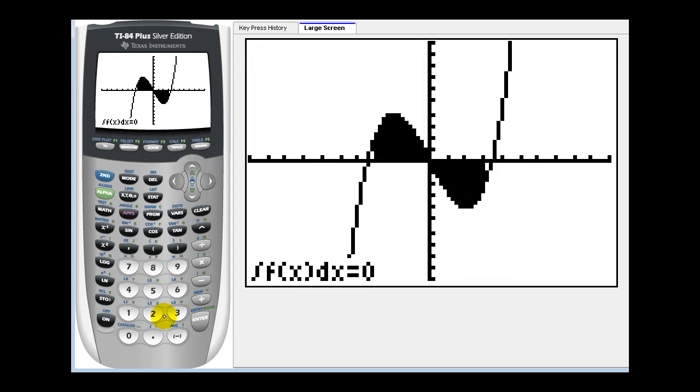And now we can see graphically why this is equal to zero. Because on this interval from negative three to zero, the function is non-negative, but from zero to three it's negative. And also there's symmetry about the origin here.